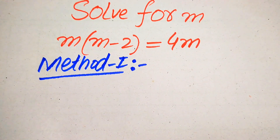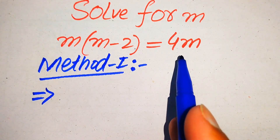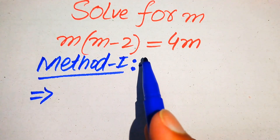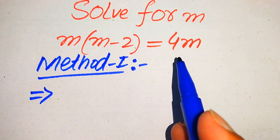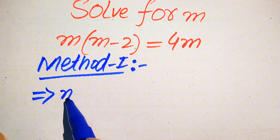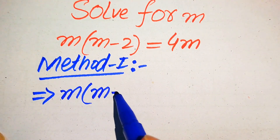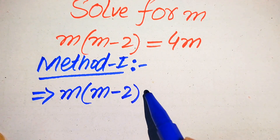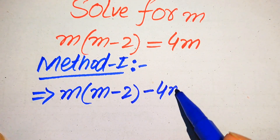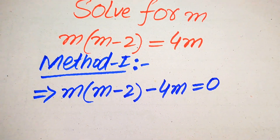Now we move towards our first method. In the first method, we move 4m to the left hand side. This is positive 4m, so when we move it to the left hand side it becomes negative, and we get m times of m minus 2 minus 4m equals to 0.